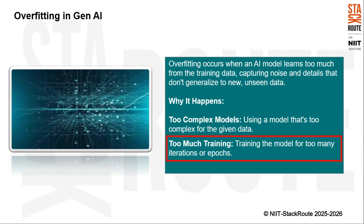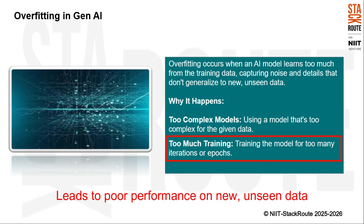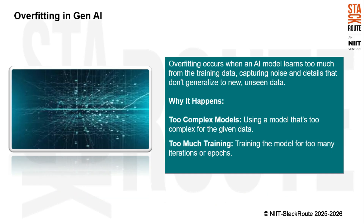Another reason for overfitting is too much training — training the model for too many iterations or epochs. When we train a model for too long, it starts to learn the noise in the training data as if it were a meaningful pattern, again leading to poor performance on new, unseen data. Understanding these causes is crucial because they help us take steps to prevent overfitting, such as simplifying the model, using regularization techniques, or stopping training at the right time.